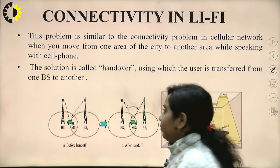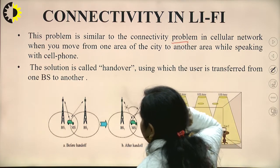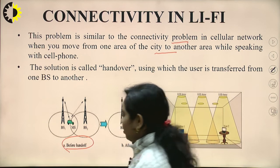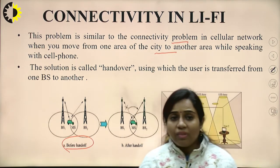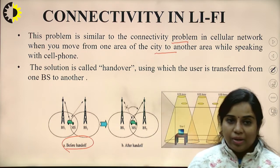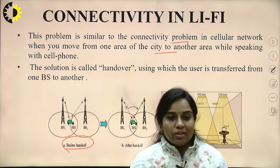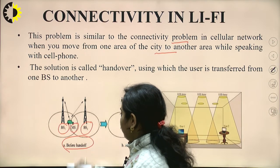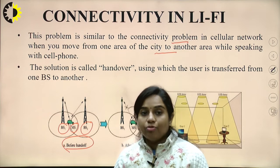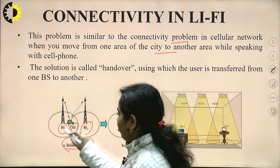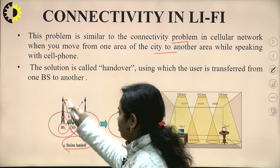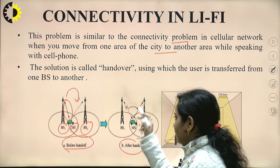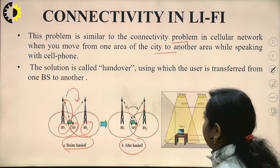Regarding connectivity in Li-Fi: this problem is similar to the connectivity problem in cellular networks when you move from one area of the city to another while speaking on a cell phone. Handoff is a very important term in mobile communication — whenever a device moves from one cell to another, control signals must be transferred from one BTS to another BTS. Here we see base station 1 and base station 2, with a mobile station transmitting and receiving data. As it moves, control signals transfer from one base station to another — this is before handoff and after handoff.